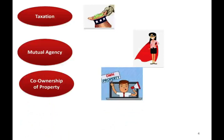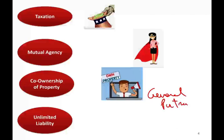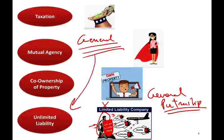Co-ownership of property: when properties are contributed, everyone is a co-owner. Everyone can use the property, obviously for business use. Now let's talk about unlimited liability. Here we are dealing with a general partnership. Under a general partnership, you have unlimited liability — you lack limited liability. Limited liability protects you personally from creditors, from lawsuits. In a general partnership, you have unlimited liability. We're going to see shortly that with certain types of partnership, you do have limited liability, but not as a general partnership.